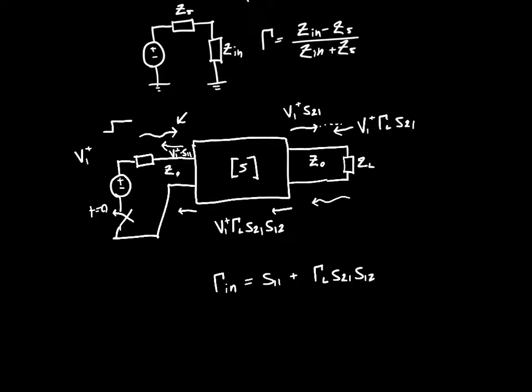So that's great. So gamma in is just equal to S11 plus gamma L S21 times S12. Except that part of the wave that wasn't reflected, or that wasn't transmitted, gets reflected again.